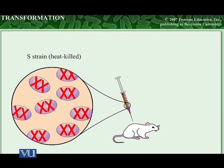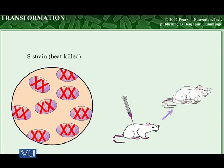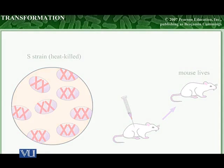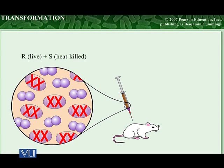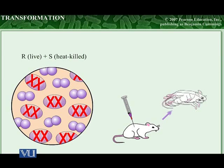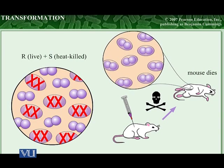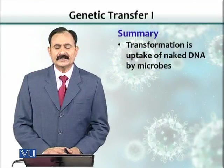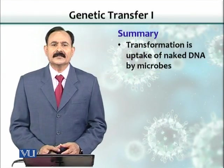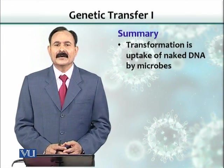Heat can be used to kill the smooth strain of Streptococcus pneumoniae; when mice are injected with these heat-killed cells, the mice live. Surprisingly, when mice are injected with a mixture of heat-killed smooth-strain cells and live rough-strain cells, the mice die, and live smooth-strain cells can be found in the blood. The harmless rough-strain cells must have gained the genes to produce capsules like those of the virulent smooth-strain cells. In summary, transformation is the uptake of naked DNA by microbes.